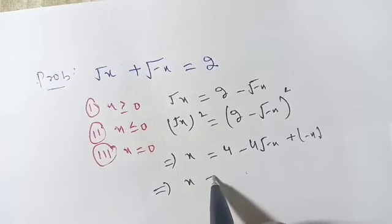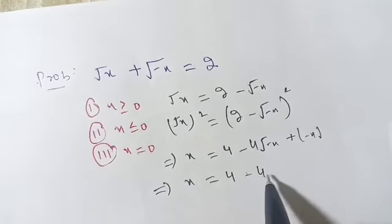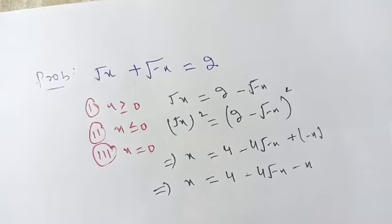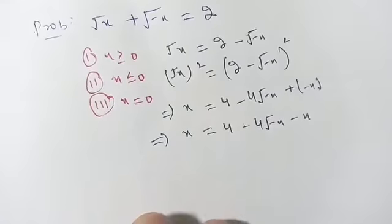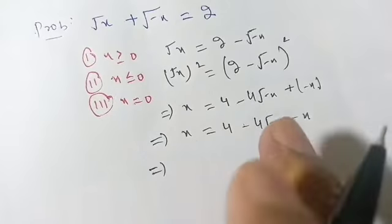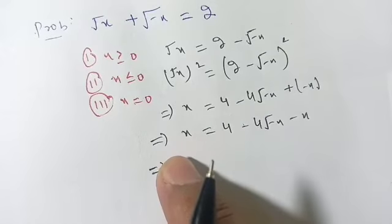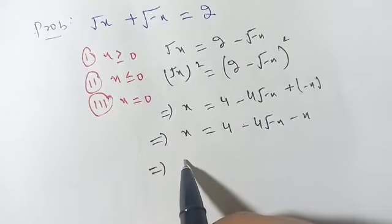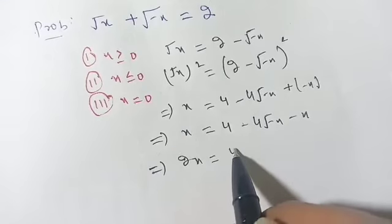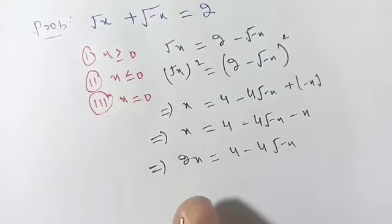So we have x is equal to 4 minus 4 root of minus of x minus x. We shift this minus x to the right-hand side and we get 2x is equal to 4 minus 4 root of minus of x.